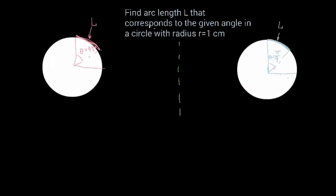Here's the statement. Let's take a look at an example over here. We're asked to find arc length L corresponding to the given angle, both on the left in degrees and on the right in radians.